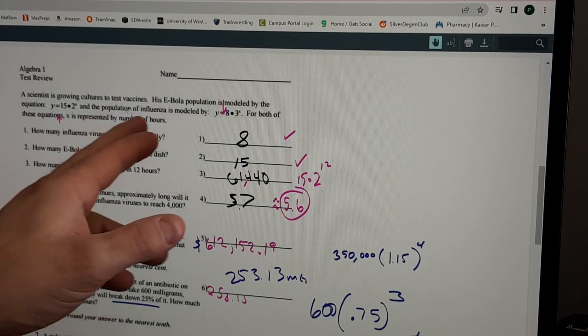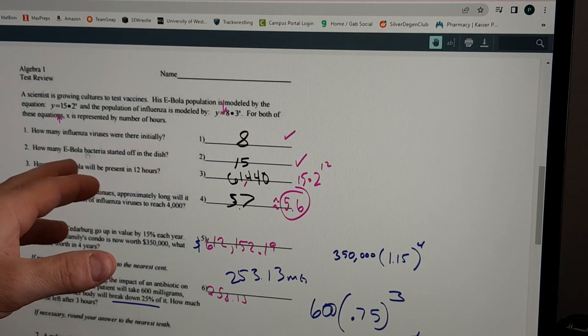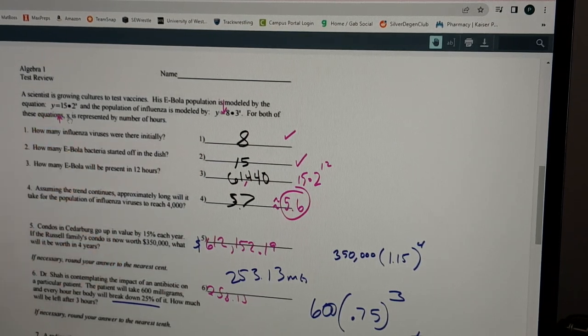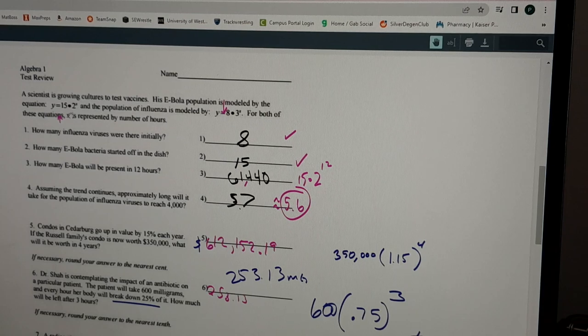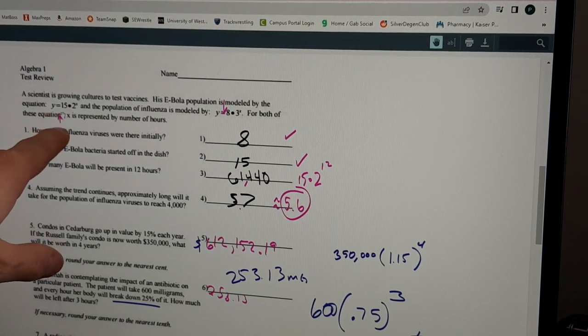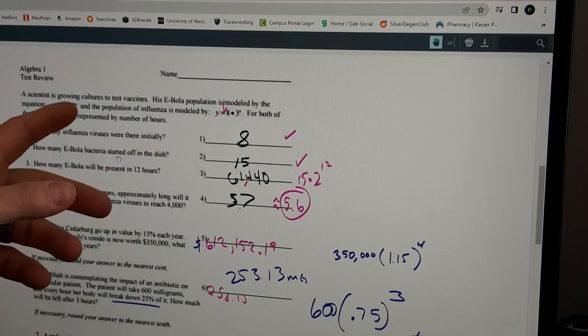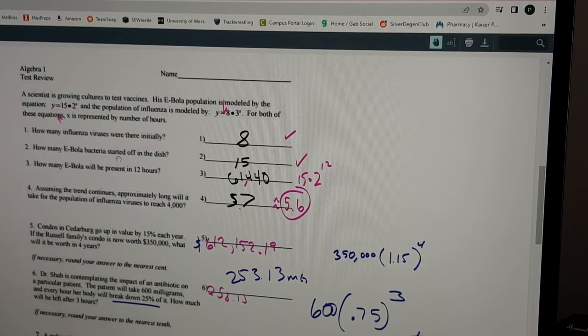Quick talk - number one, how many were there initially? If they talk about the flu viruses, you do the flu equation. It's 8 for Ebola. How many did they start in the dish? You take that first value - you can see right in front of your equation there's a 15 right there, and that is the initial value. In 12 hours, you plug in a 12 for x and you get 61,440.